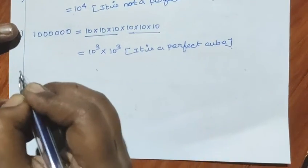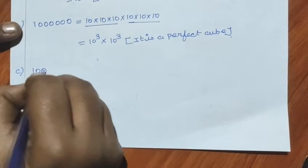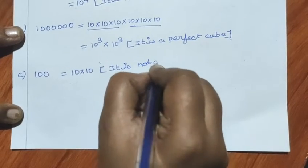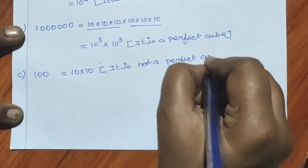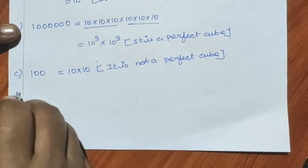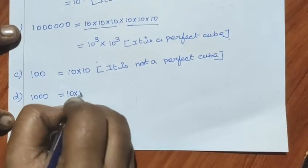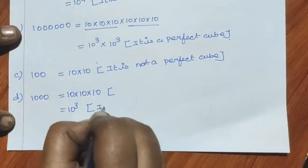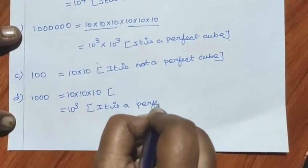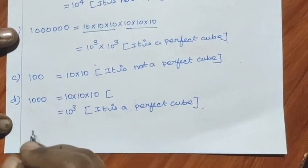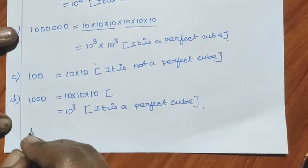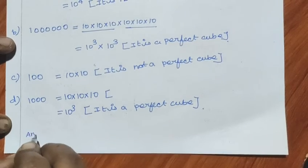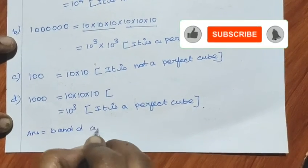Next, C sum: 100 equals 10 into 10 — it is not a perfect cube. D sum: 1000 equals 10 into 10 into 10, which is 10 cubed — it is a perfect cube. So, B and D are perfect cubes.